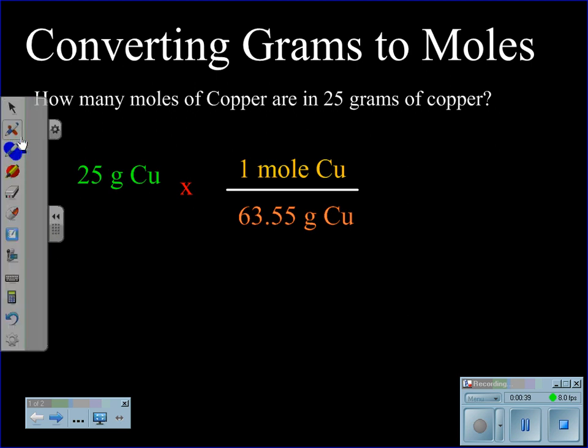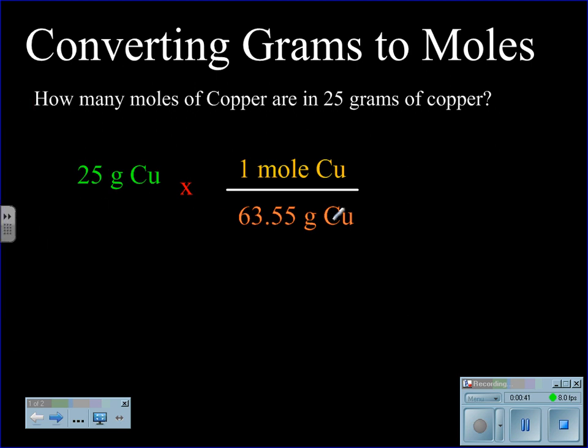By putting grams of copper in the denominator, it allows us to cancel the grams of copper, leaving us with moles of copper as our solution.